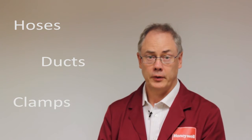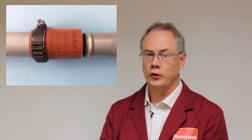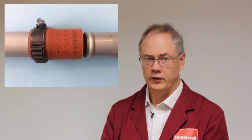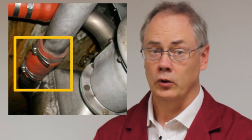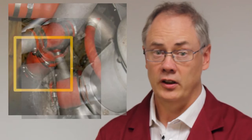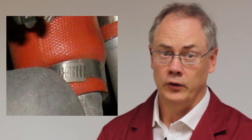We will begin by looking at the system hoses, ducts and clamp connections. Braided connections are used throughout the ECS. Black staining around the hose circumference is a typical leakage indication. This may be caused by loose clamps or degraded hoses.